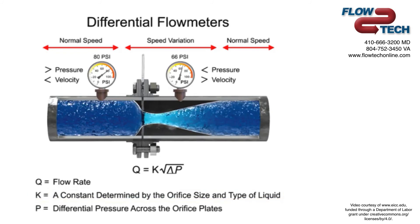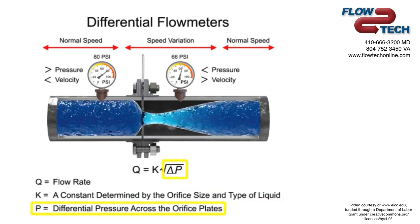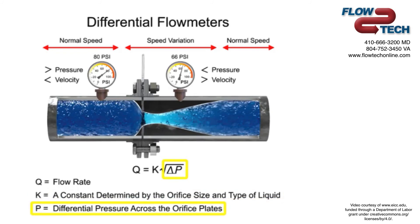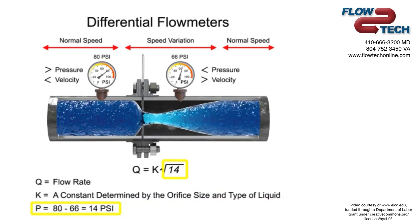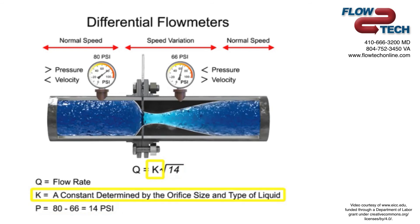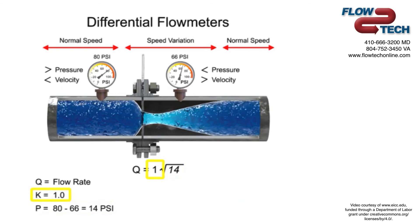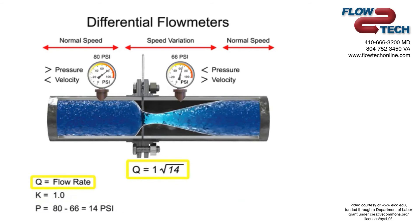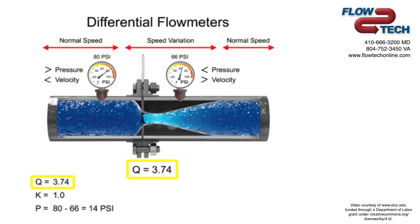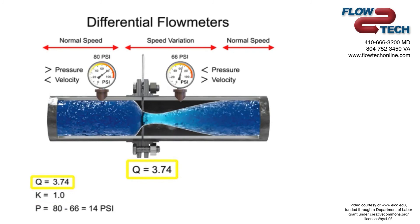For example, if the differential pressure increases by 14 PSI with a K factor of 1, the flow rate is increased by 3.74.